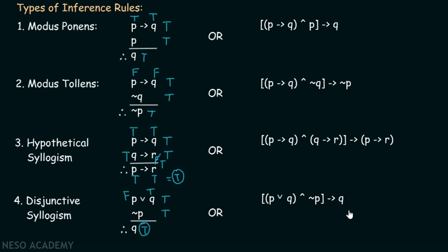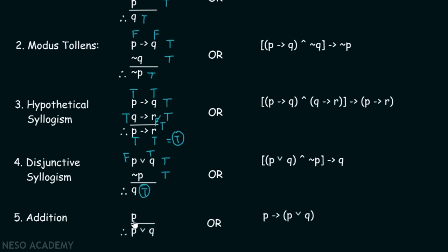The fifth rule is the addition rule: p, therefore p or q. When p is true, then p or q is also true, because true OR with anything is always true. Then the argument is always satisfied. Hence, this argument is valid, and we can write it as: p implies p or q.